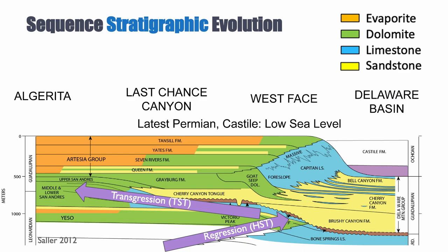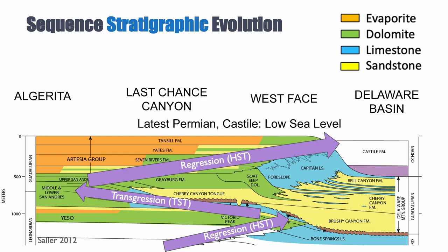Summing up the evolution: we have a regression during the HST of the Yeso and Victorio Peak formations, followed by a transgression and retrogradation of the lower San Andreas. Then from the upper San Andreas all the way to the upper Guadalupian — the upper Capitan formation — we have evidence for a regression of the shoreline. The carbonates are completely filling accommodation. This is a very large-scale HST, though in between we have smaller-scale HST and LST from higher-order sea level variations.